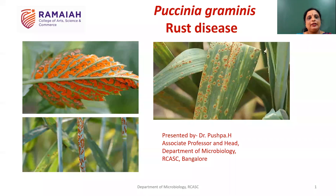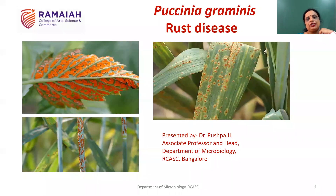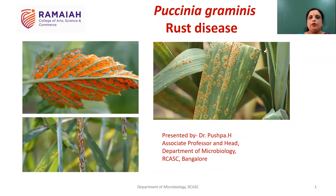Dear students, welcome to this video lecture on Puccinia graminis. As we were studying in our previous class, this is also a fungal pathogen which causes disease in various economically important plants. Today, we are taking the example of Puccinia graminis and studying the rust disease it causes in wheat. Let us start with this particular class.